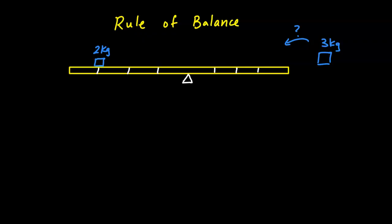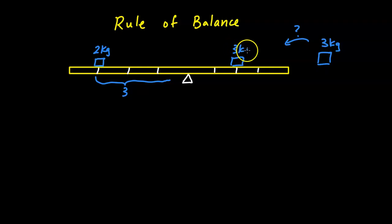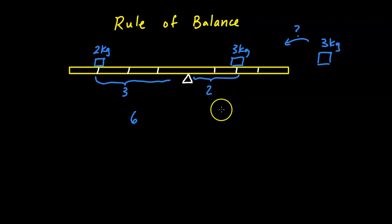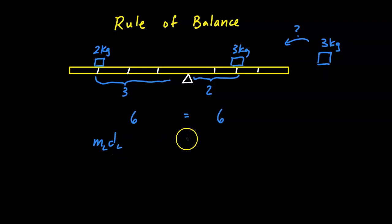Now let's look at the rule of balance: how do we know if something will balance or rotate? On a seesaw with a pivot fulcrum, a 2 kg object placed 3 spaces away is balanced by a 3 kg object placed 2 spaces away. Notice that 2 × 3 = 6 on the left, and 3 × 2 = 6 on the right — they're equal. The rule of balance is: mass times distance from the pivot on the left must equal mass times distance on the right.